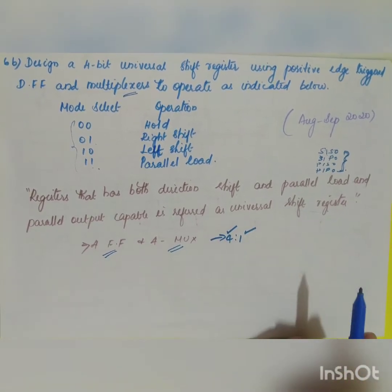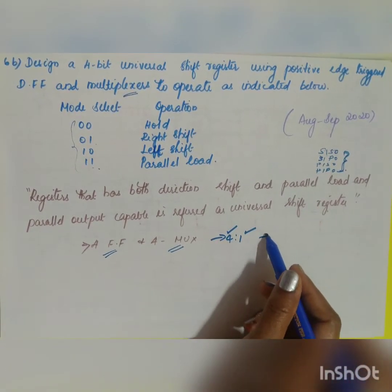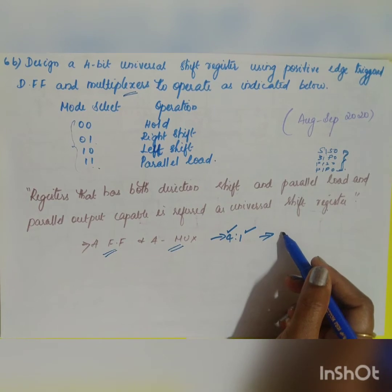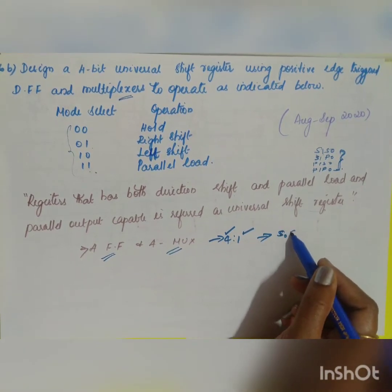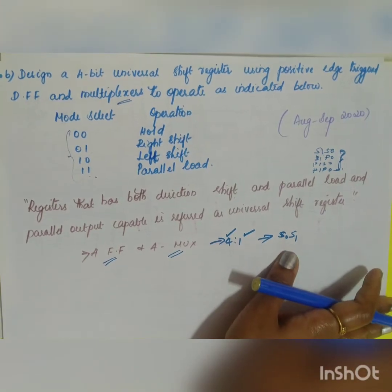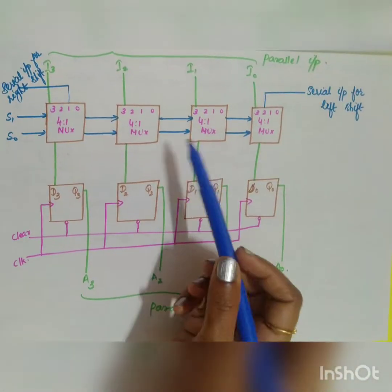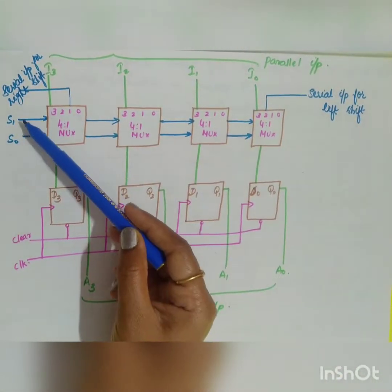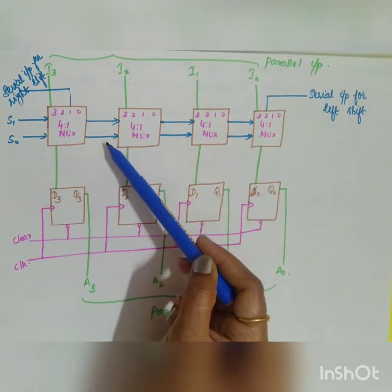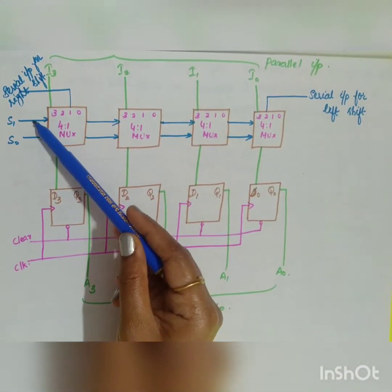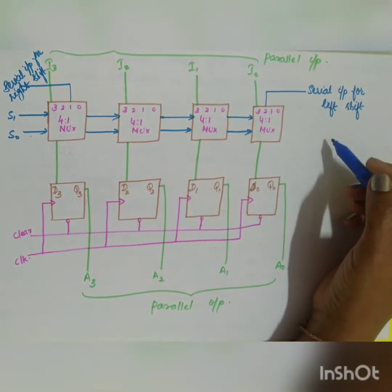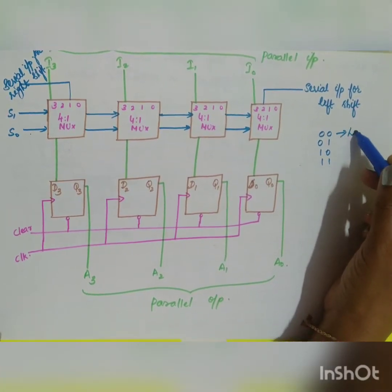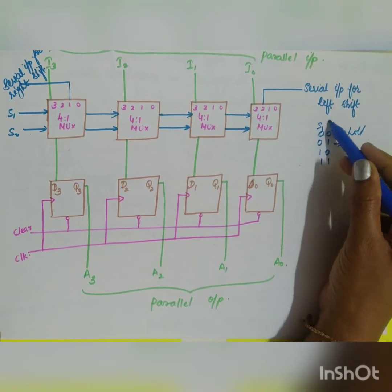The multiplexer used is 4-to-1, with four inputs and one output. A 4-to-1 MUX requires two select lines, which we take as S0 and S1. Depending on the select lines, the MUX will operate accordingly. The select lines S1 and S0 correspond to the mode select: 00 is hold, 01 is right shift, 10 is left shift, and 11 is parallel load.